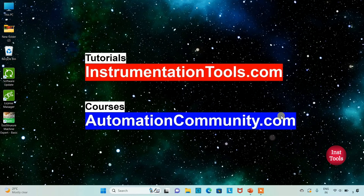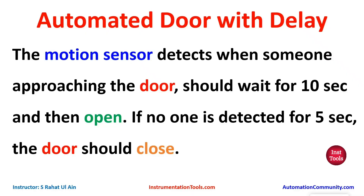The opening and closing of the door will be delayed for some time. In this example, the motion sensor detects when someone is approaching — the door should wait for 10 seconds and then open. If no one is detected for 5 seconds, the door should close.